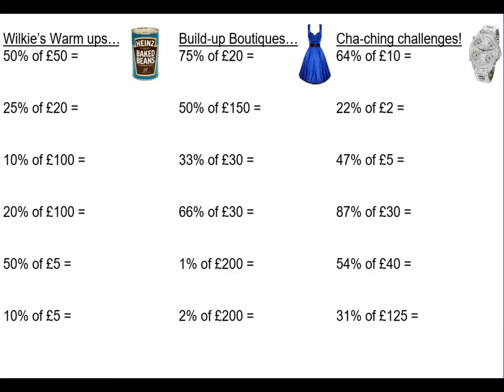Here's a worksheet with lots of examples for you to have a go at. The ones on the left are more straightforward, the middle column are slightly more difficult, and the column on the right are the harder ones. Have a go and see how you get on. For the first one, 50% of 50: you might recognise that 50% is a half, so a half of 50 is 25. Here are the quick answers for the rest of the worksheet.